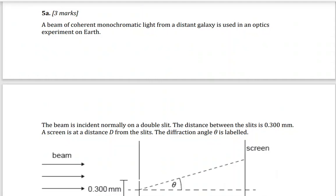This is Miss Linda. We'll continue today with the IP past paper questions. Here we have a beam of coherent monochromatic light — monochromatic means one color: red, green, purple, any color but only one. From a distance, a galaxy (which is a group of stars) is used in an optic experiment on Earth. The beam is incident normally on a double slit, and the distance between the slits is 0.3 millimeter — this is the small distance d.